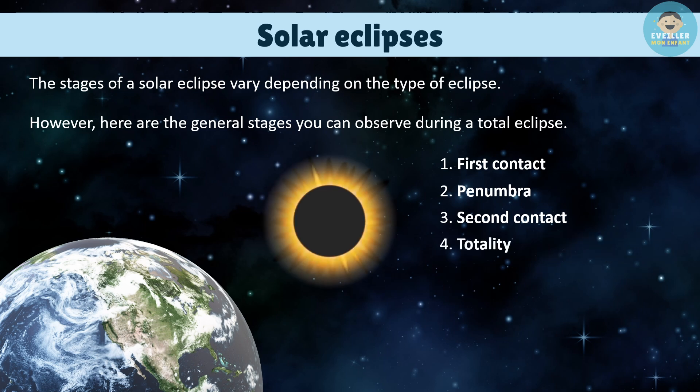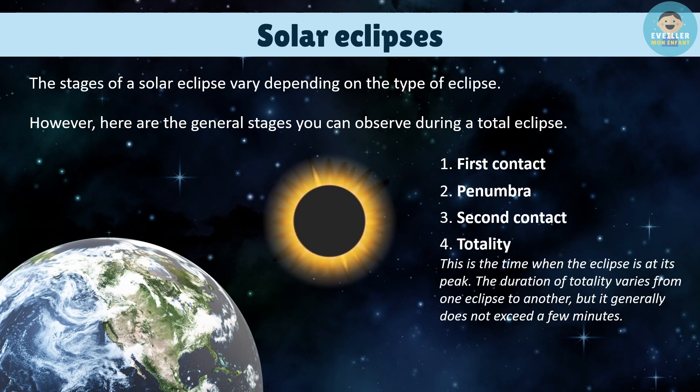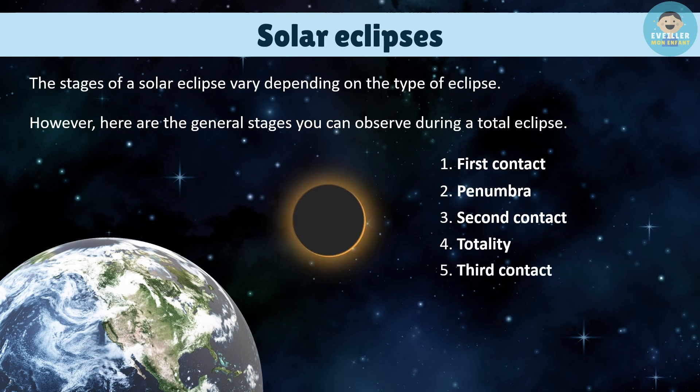Totality: this is the time when the eclipse is at its peak. The duration of totality varies from one eclipse to another, but it generally does not exceed a few minutes. Third contact: the Moon begins to move away from the Sun. Sunlight gradually returns.